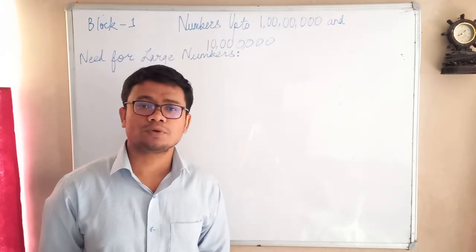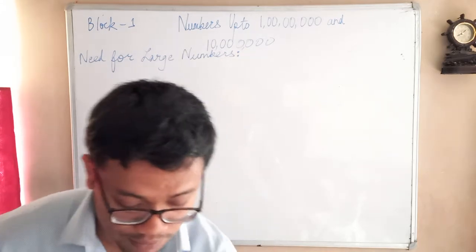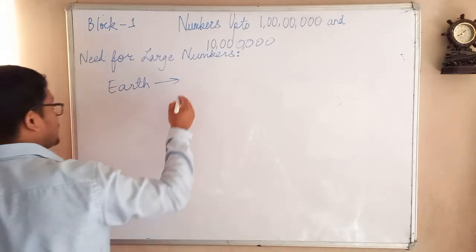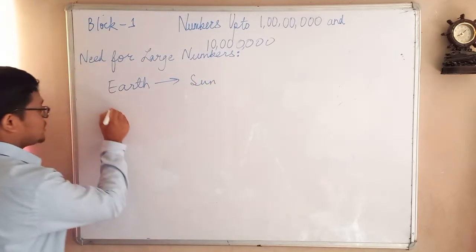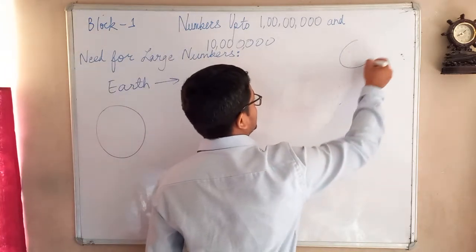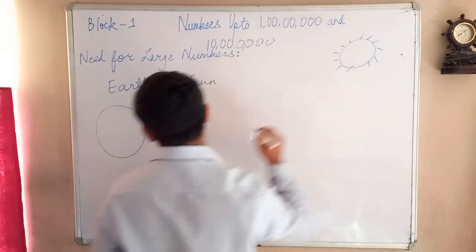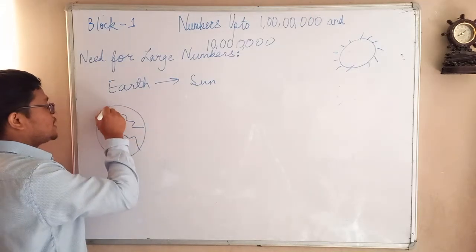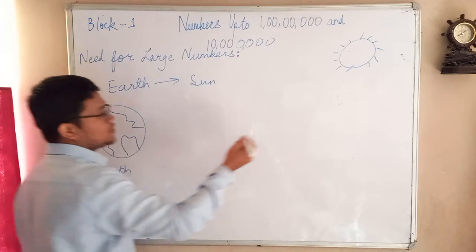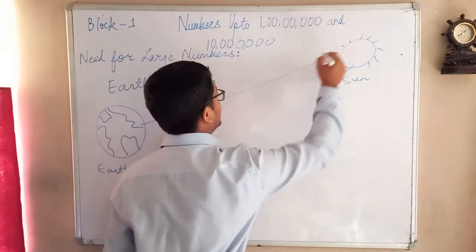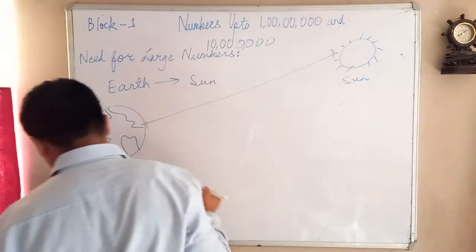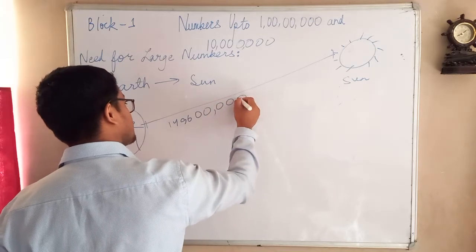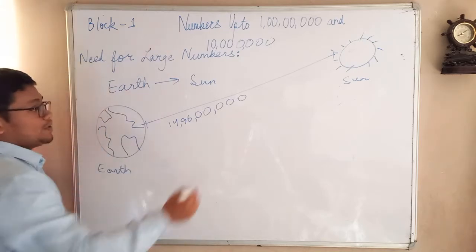We will need very big values to calculate the distance between the earth and the moon. For example, let me give an example from earth to sun. This is our earth and this is our sun. If you want to calculate the distance between the earth and the sun, it is around 1, 4, 9, 6, 0, 0, 0, 0, 0 kilometers.